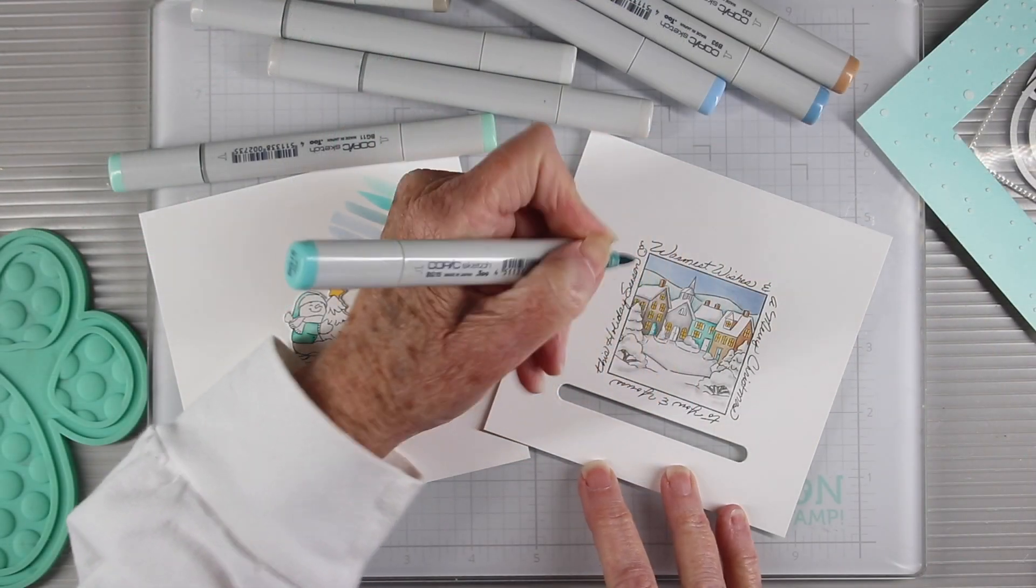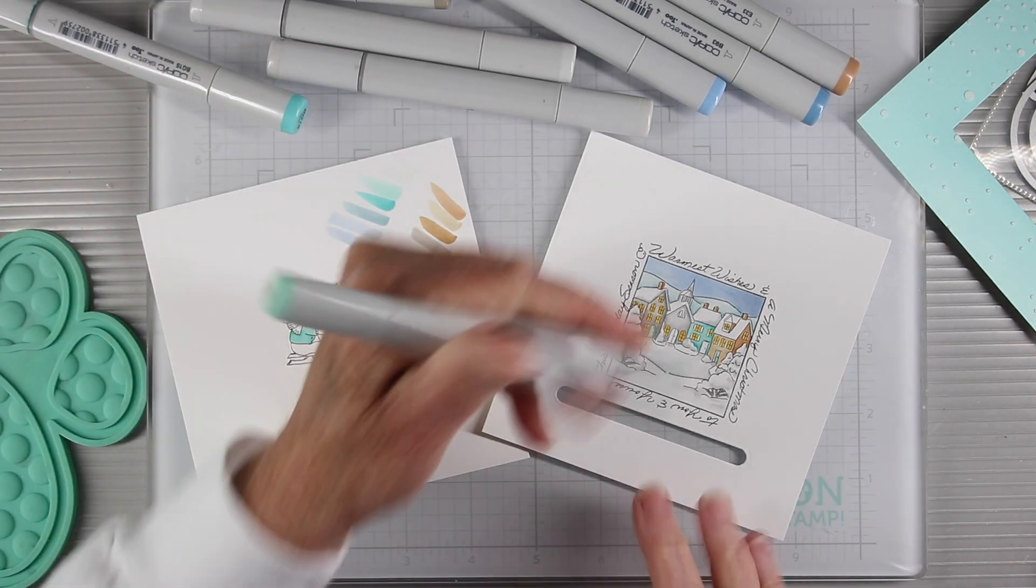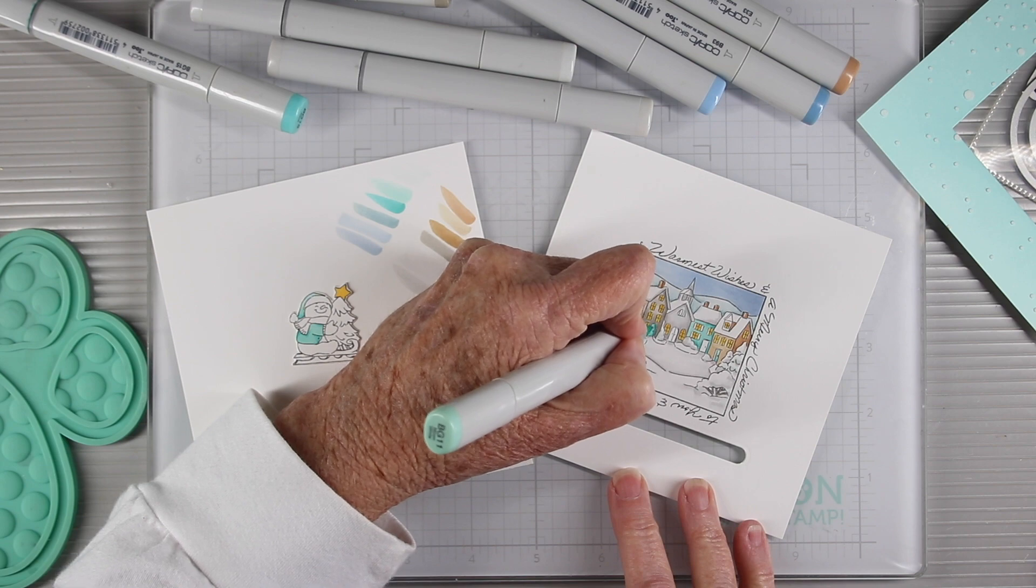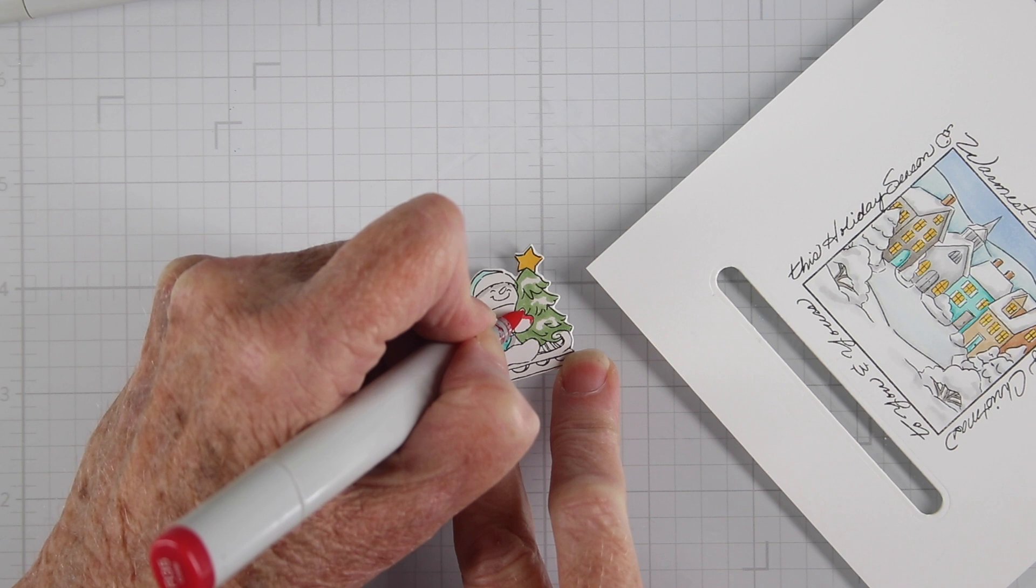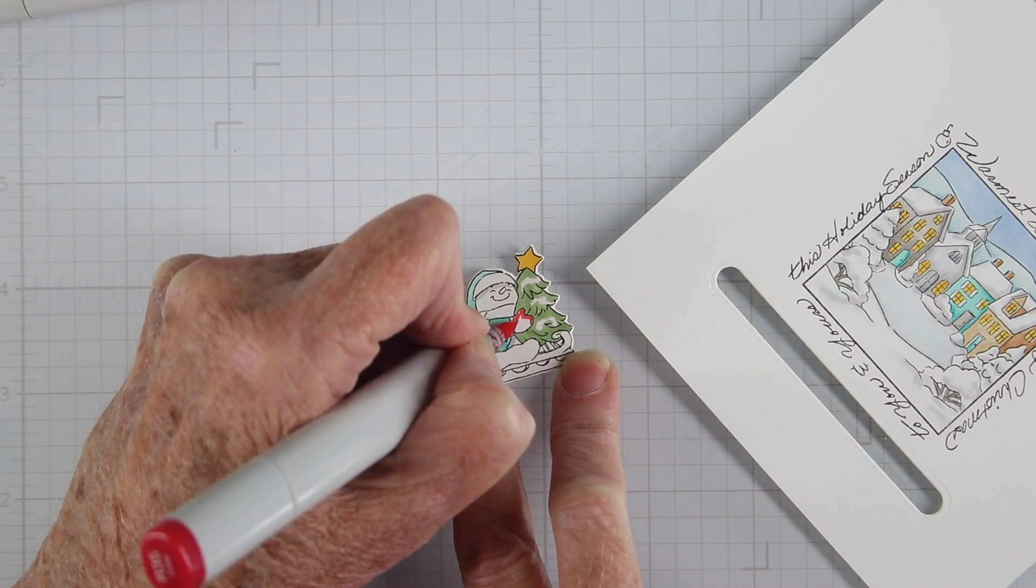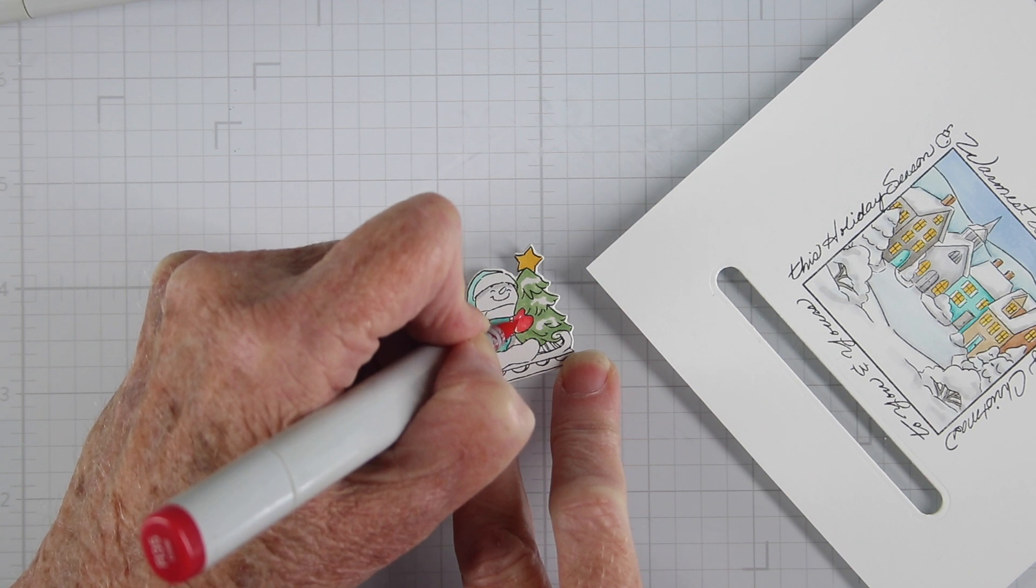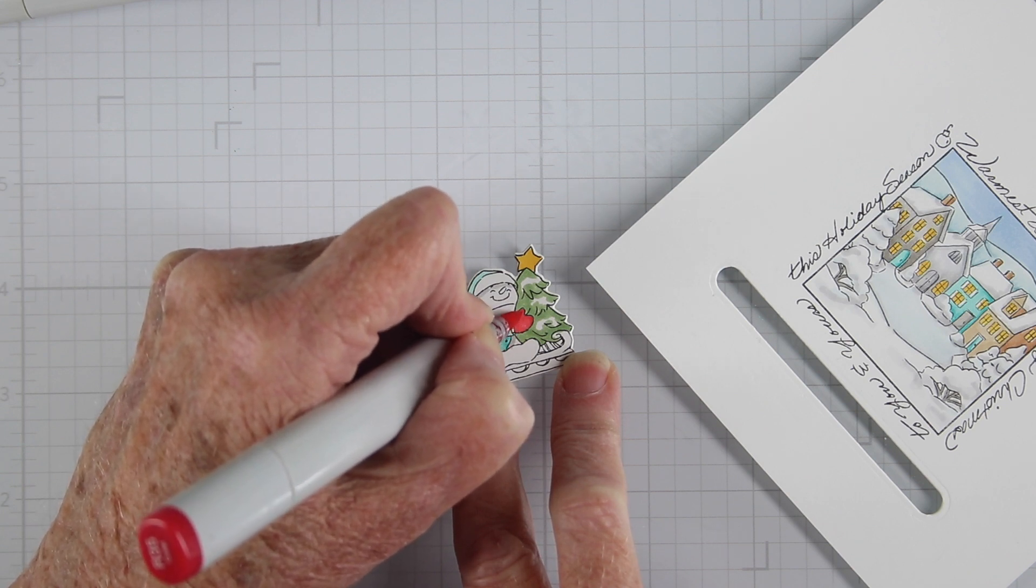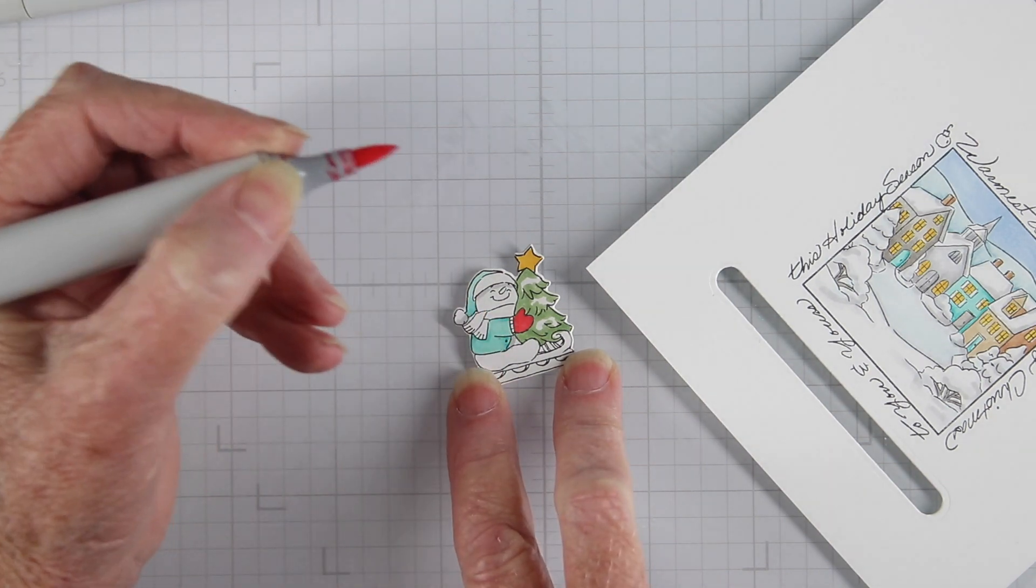Now I'm coloring with some Copic markers, doing some basic coloring. I've chosen muted tones of blues and browns along with shadowing with gray for my snowy scene. For my little snowman, I've gone with brighter colors with a nice bright red scarf and matching gloves and a green tree. I have all my colors listed in the description box below.